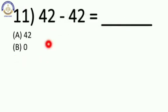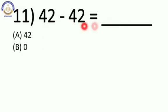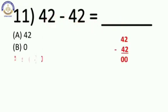Next: 42 minus 42 is equal to blank. Same number hum subtract karenge to humein milega 0. So our answer is 0. Very good.